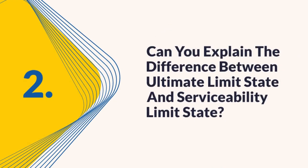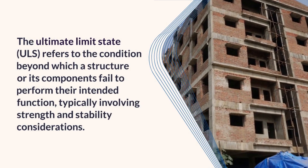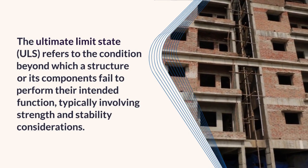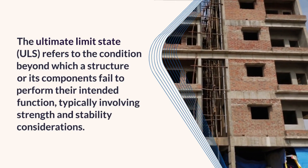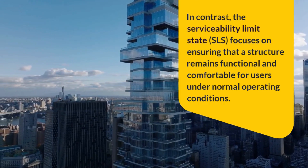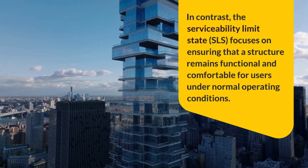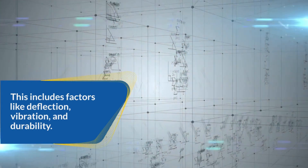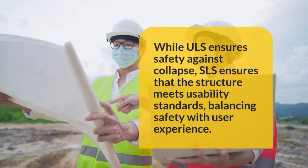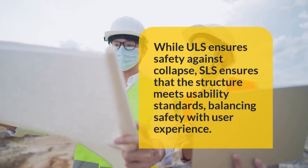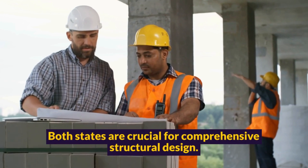Question 2: Can you explain the difference between ultimate limit state and serviceability limit state? The ultimate limit state (ULS) refers to the condition beyond which a structure or its components fail to perform their intended function, typically involving strength and stability considerations. In contrast, the serviceability limit state (SLS) focuses on ensuring that a structure remains functional and comfortable for users under normal operating conditions, including factors like deflection, vibration, and durability. While ULS ensures safety against collapse, SLS ensures the structure meets usability standards, balancing safety with user experience. Both states are crucial for comprehensive structural design.